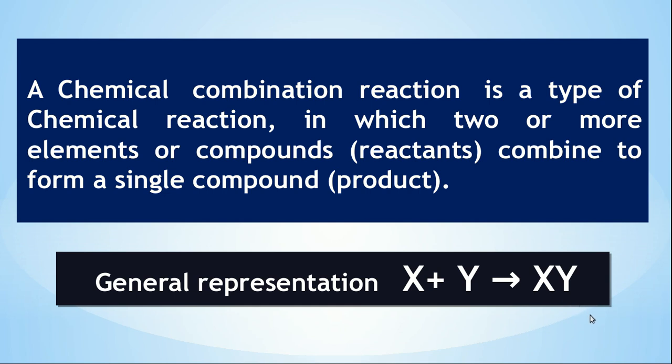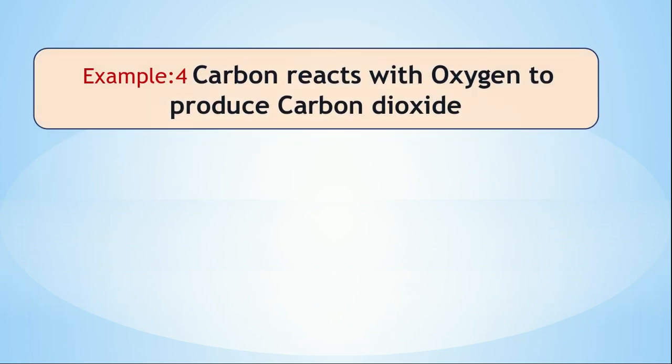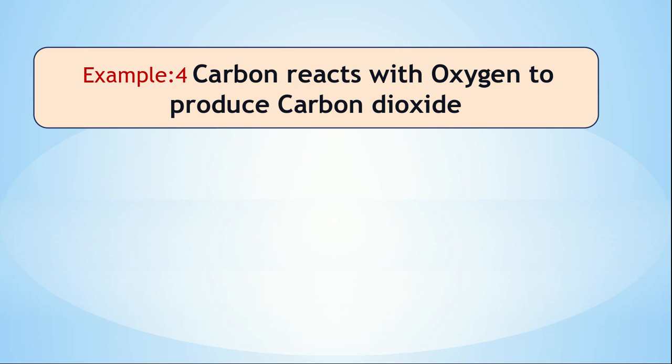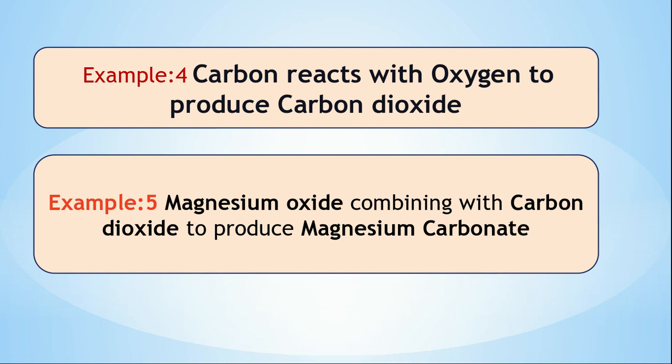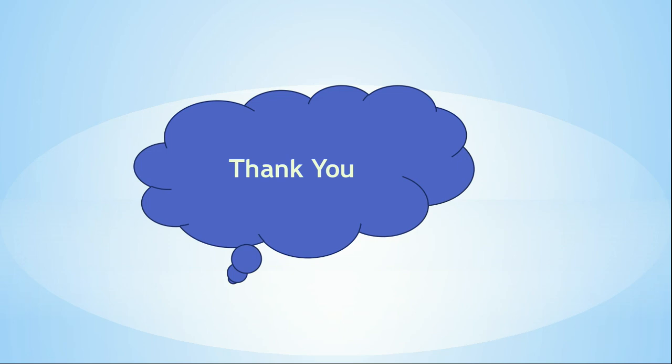I hope you are clear with the meaning of chemical combination reaction. Now, examples from day-to-day life: carbon reacts with oxygen to produce carbon dioxide — C + O₂ → CO₂. Another example: magnesium oxide combines with carbon dioxide to produce magnesium carbonate. I hope you have learned about this type of chemical reaction — chemical combination. Thank you.